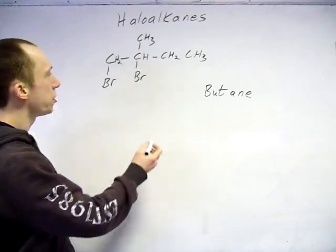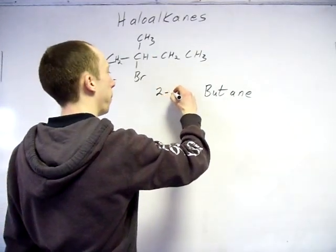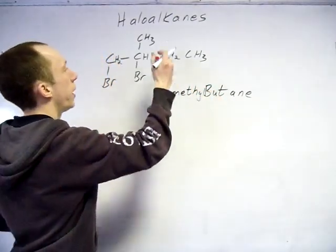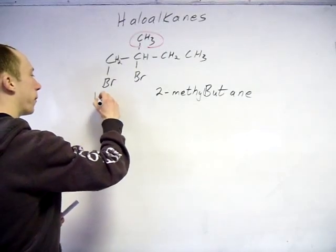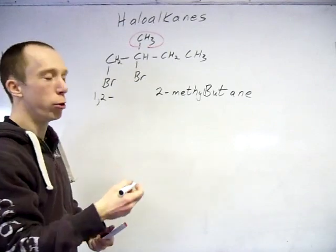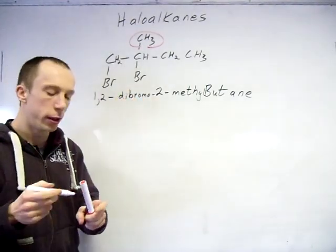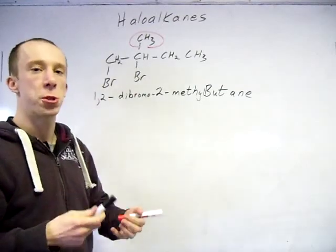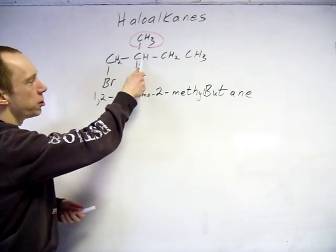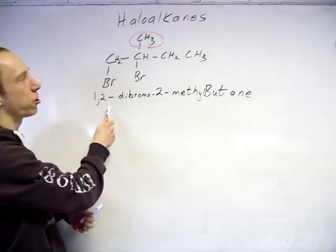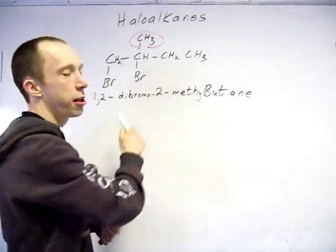Now look for where we've got any branches - we've got branches on carbon one and on carbon two. So we've got a methyl there, you can see the methyl sticking off it. We've also got some halogens here on carbons one and two, and they are both bromine, so 'bromo'. Remember: if there are two of them it's 'di' - you will lose marks if you forget that. So '1,2-dibromo' because there's a bromine on carbon one and carbon two. On carbon two there is also a methyl, and the longest carbon chain is four, and '-ane' tells me it's all single bonds: 2-methyl-1,2-dibromobutane.